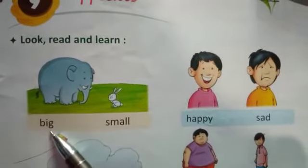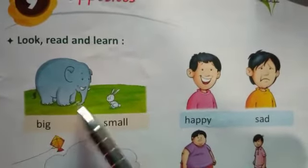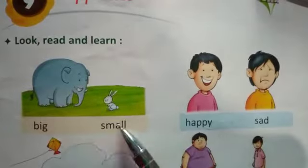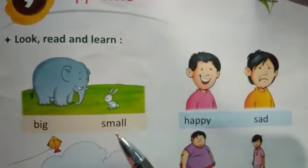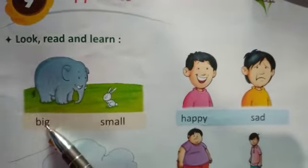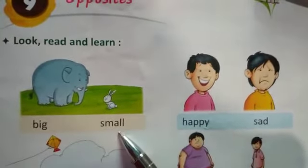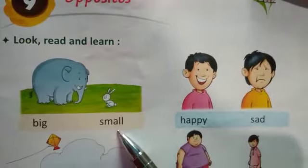Big. B-I-G. Big means bada. What is the opposite of big? Small. Small is the opposite of big. Big means bada, small means chota.